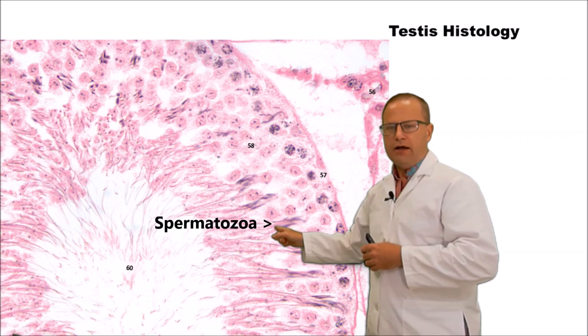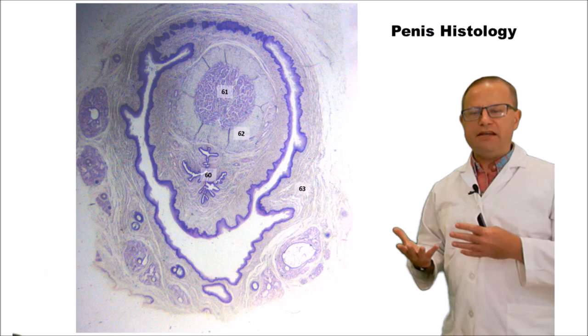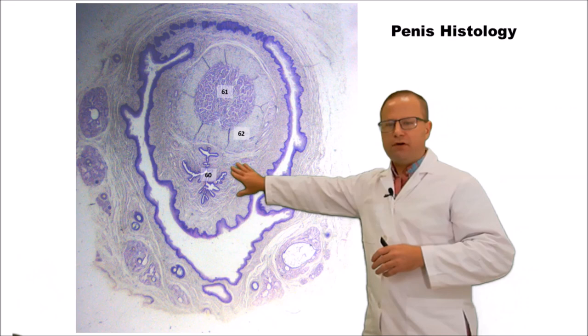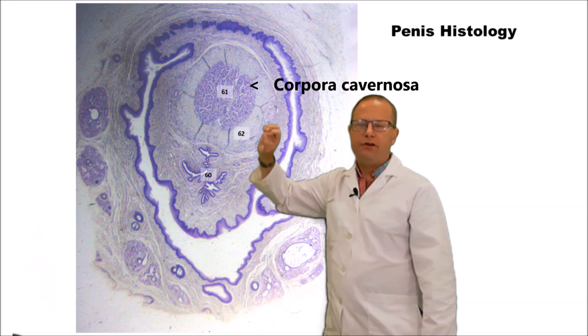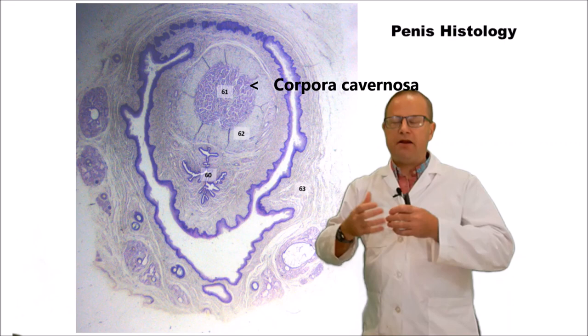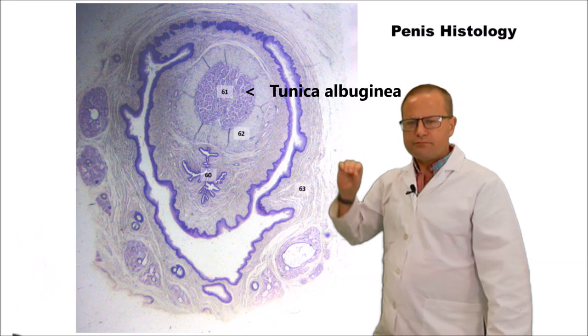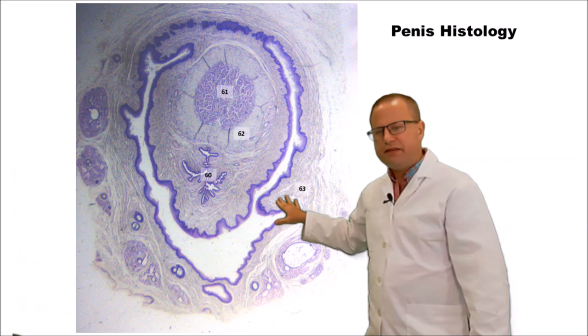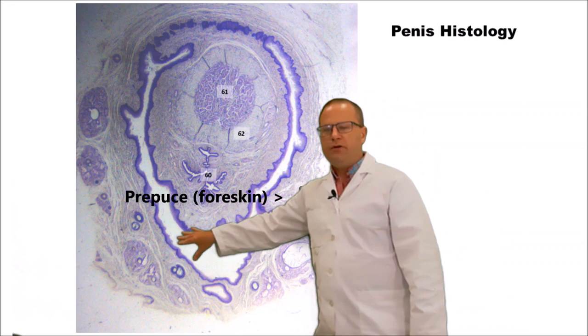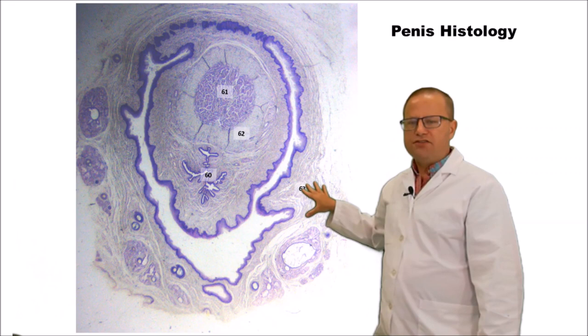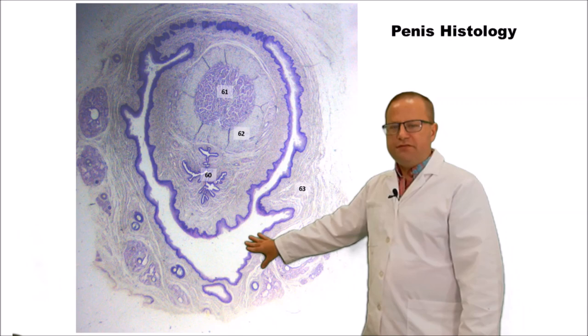Now let's look at the anatomy of the penis via a histological cross-section. The small gap in the center is the urethra — where ejaculation and urination occur. Above that is the erectile tissue, the corpora cavernosa penis, which allows the penis to engorge with blood during parasympathetic stimulation. Surrounding that is the tunica albuginea. The large gap visible in this section is the space between the penis proper and the foreskin or prepuce, which protects the glans penis and lubricates it. The glands in the foreskin secrete sebum, which can become a cheese-like substance known as smegma.